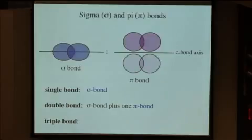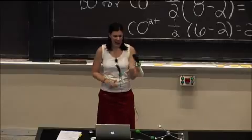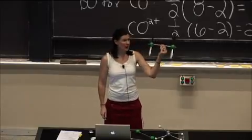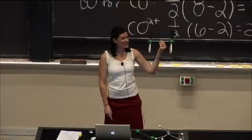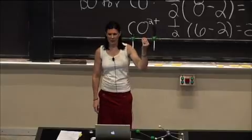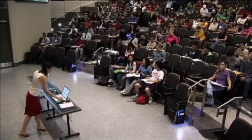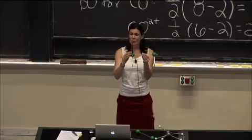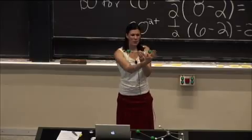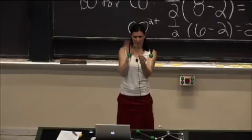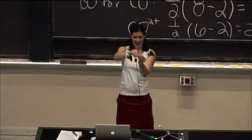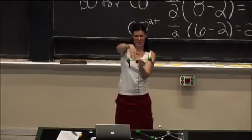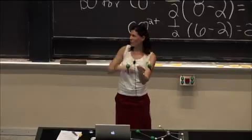A triple bond has one sigma bond on the internuclear axis and two pi bonds. The first pi bond has electron density above and below the bond axis, and the second is perpendicular to that — electron density in front of and behind the bond axis — formed by two additional sets of p orbitals interacting.